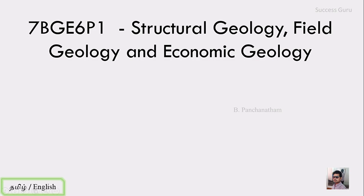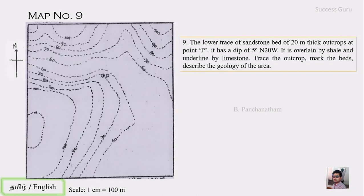Good morning students, we are in our practical lecture number six. Today we are going to solve map number nine. The question: a lower trace of the sandstone bed of 20 meters thick outcrops at point P. It has a dip of 5 degrees North 20 West. It is overlain by shale and underlain by limestone. Trace the outcrop, mark the beds, and describe the geology of the area.